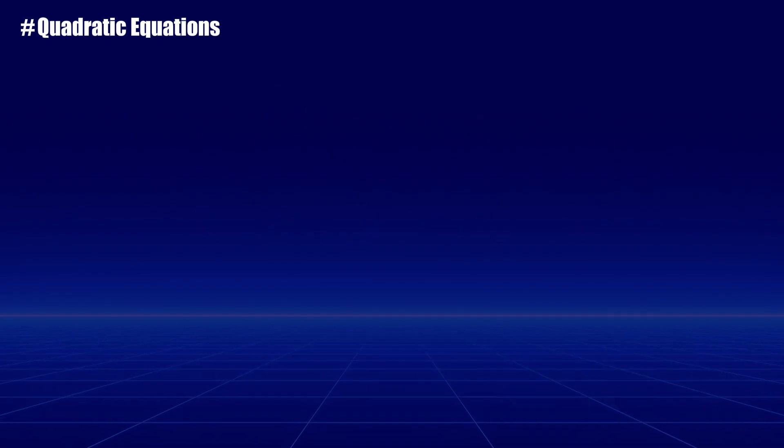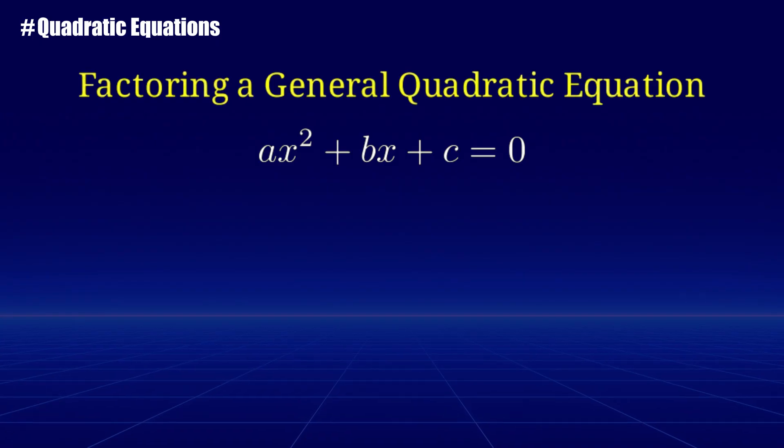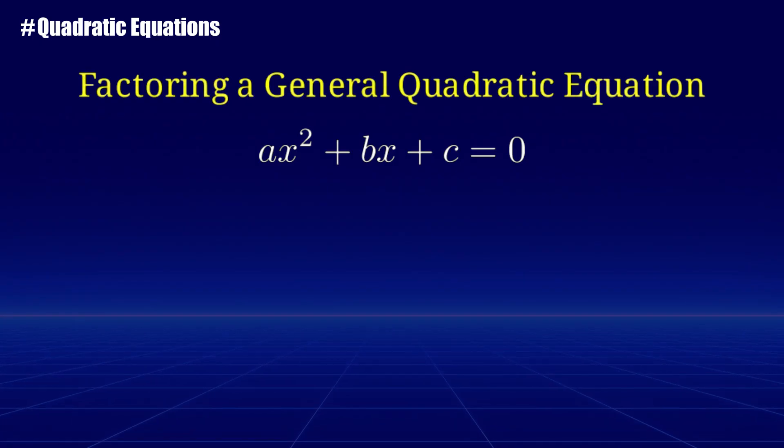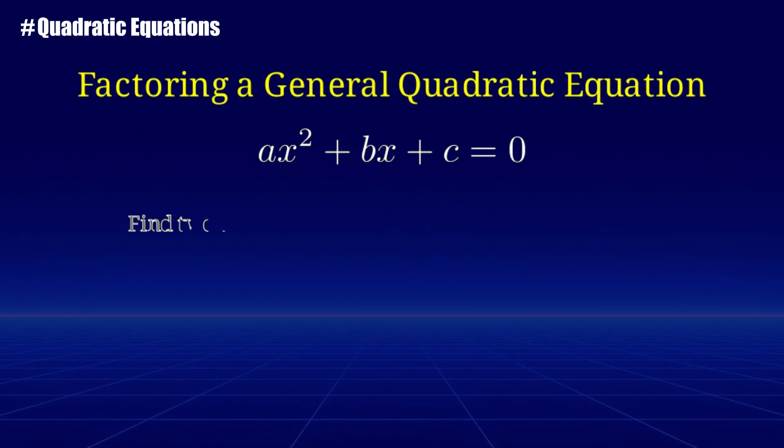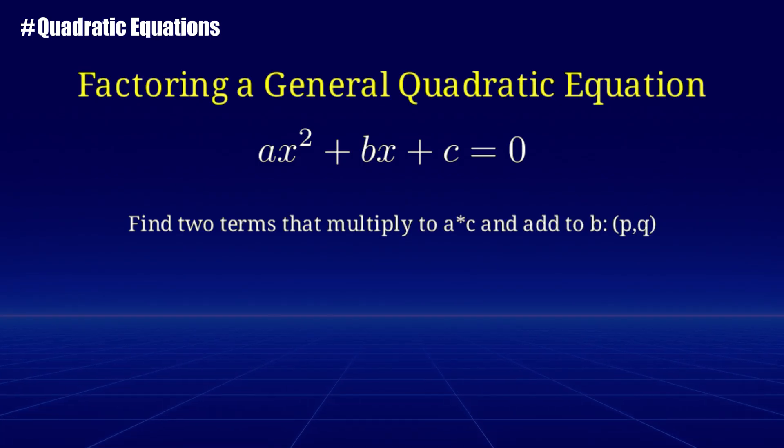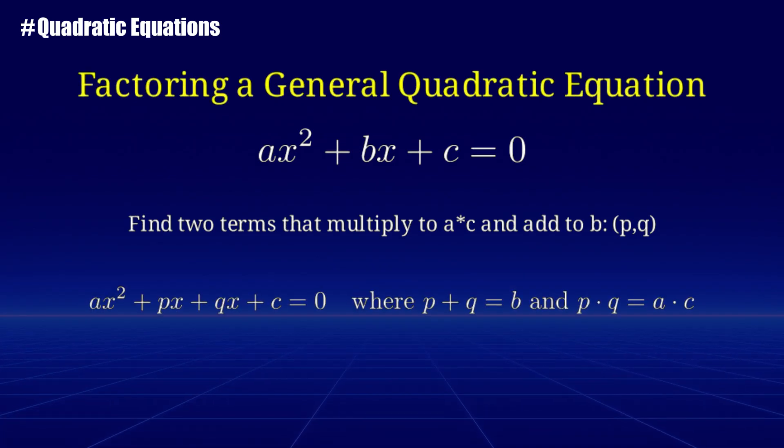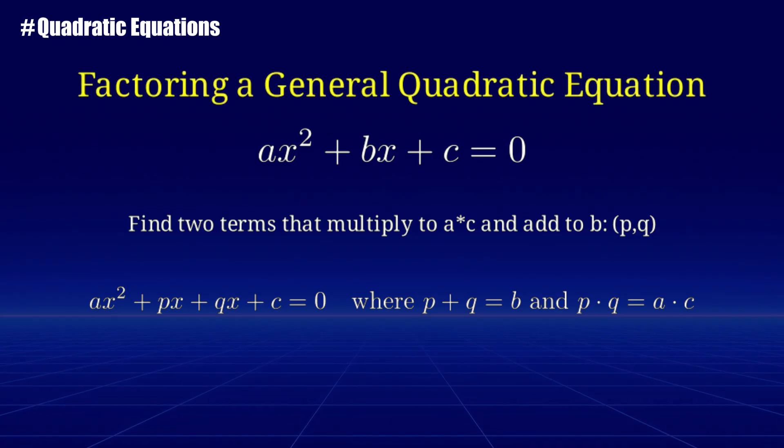Let's look at the steps to factor a quadratic equation. First, we have to ensure that the quadratic equation is in the form ax squared plus bx plus c equals 0. Then, we find two numbers that multiply to the product of a and c and add to b. After, we rewrite the middle term bx using the two numbers found in the previous step.